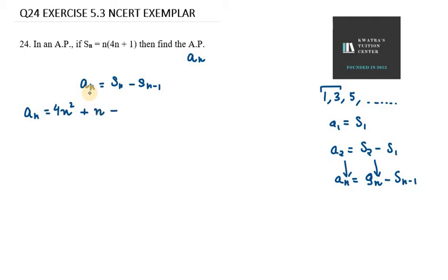If we need Sn minus 1, then we have to put n as n minus 1. So n minus 1 times 4 times n minus 1 plus 1, bracket close.